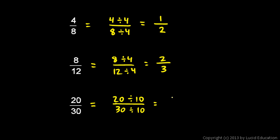In the numerator, 20 divided by 10 is 2, and in the denominator, 30 divided by 10 is 3. So 20 over 30 is equivalent to 2 over 3.